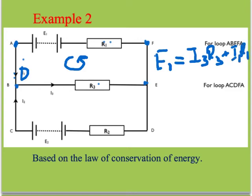How about for loop A, C, D, F, A? So let's get rid of some of this. Now, it's A, C, D, F, A. So that's around the whole outside.